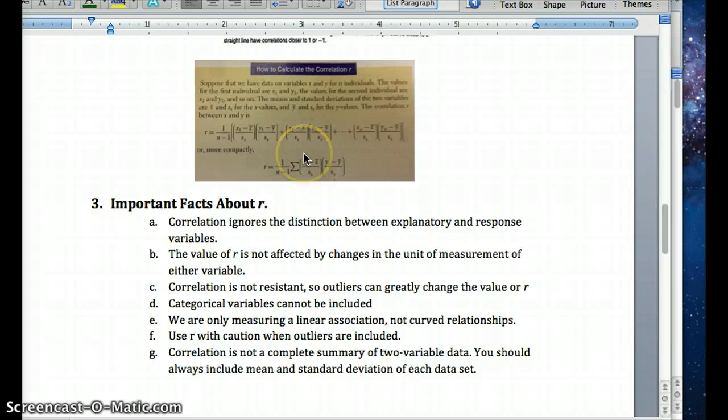So R is calculated, as you see up here. In your book, please refer to page 152 for this same little blurb about the formula. So basically, we have the summation of each value minus the mean divided by the standard deviation, multiplying those two, and adding up as we go.